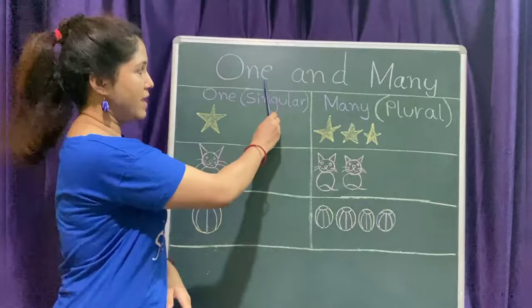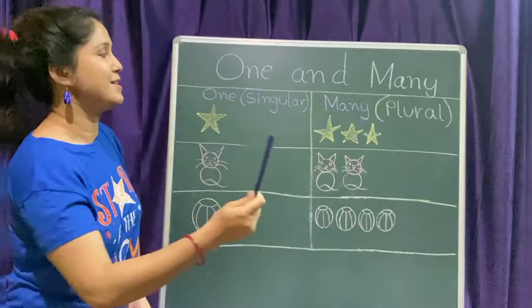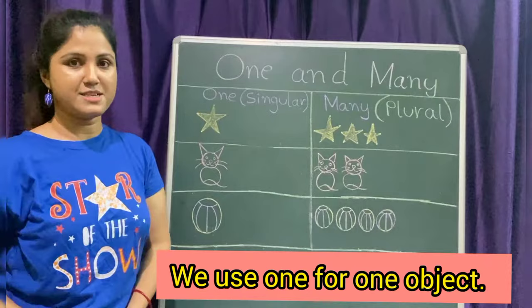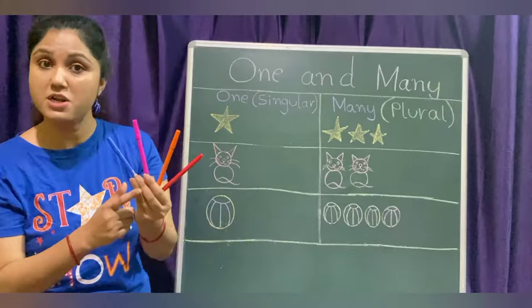Children, what is this? This is a sketch pen. How many sketch pens? One. So, we use 'one' for one object. Now, tell me, how many sketch pens are here? Let's count — one, two, three, four. Four sketch pens. So children, we use 'many' for more than one object.